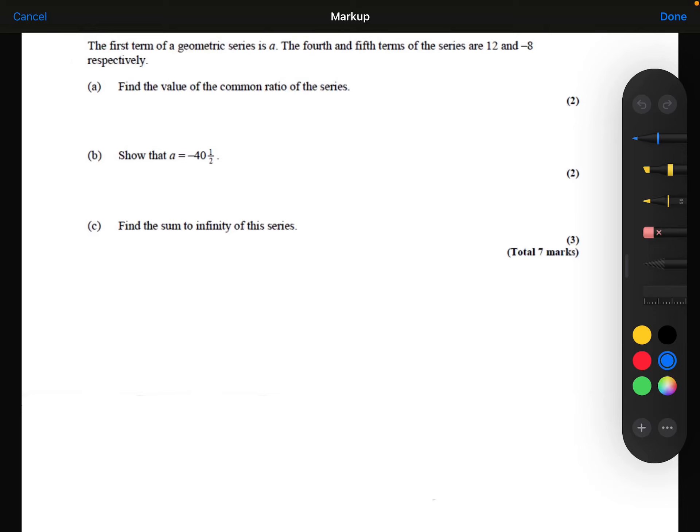The first term of a geometric series is A. The fourth and fifth terms of the series are 12 and minus 8, respectively. Part A, find the value of the common ratio of the series.